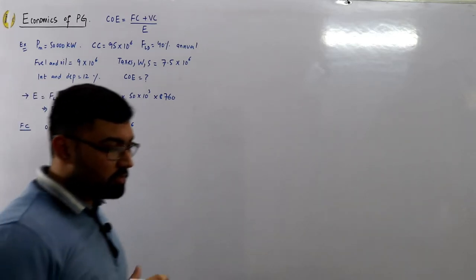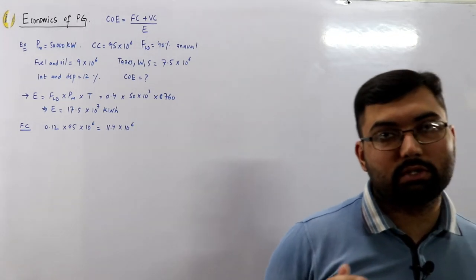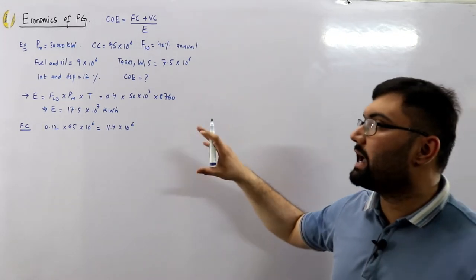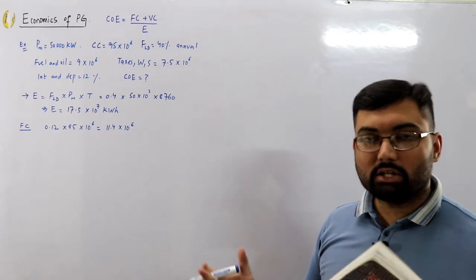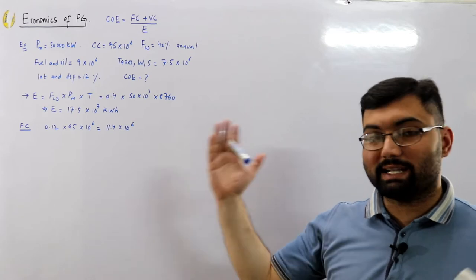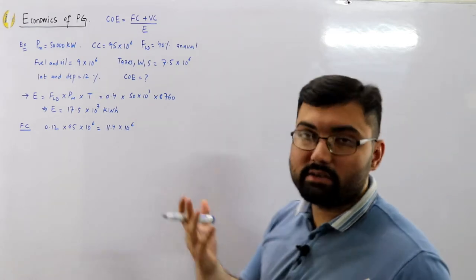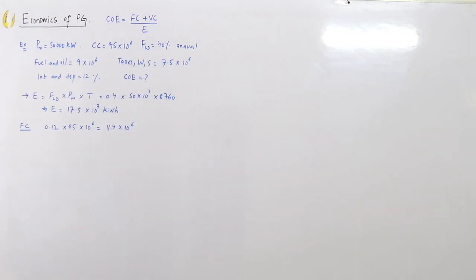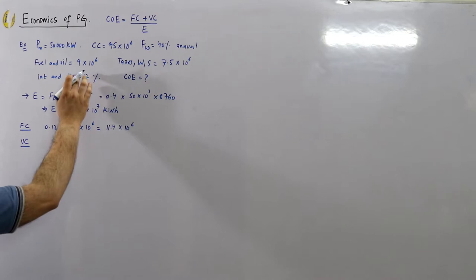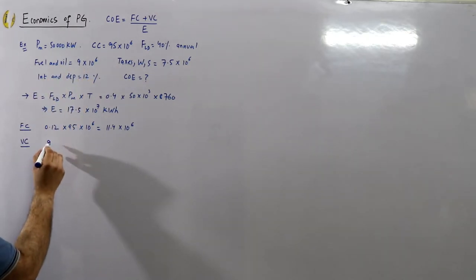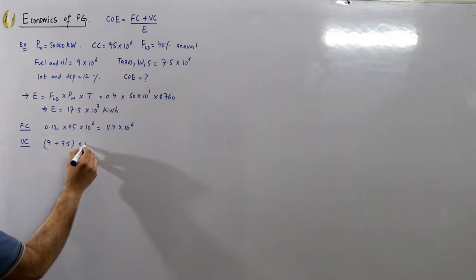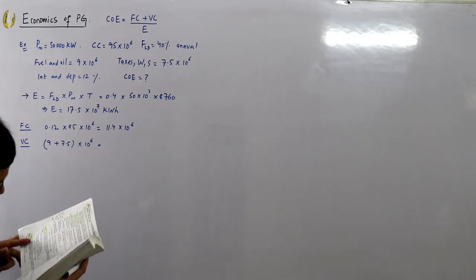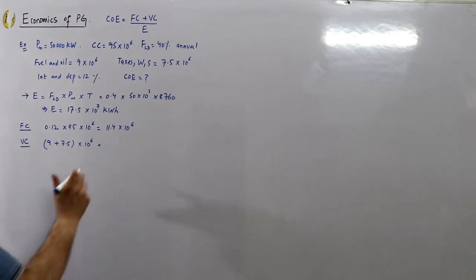You may ask why we don't take the full capital cost. We are dealing with annual calculations, and the capital cost is spread over the entire lifespan of the equipment — 40 to 70 years. The variable or running cost includes fuel (9 million) and taxes, wages and salaries (7.5 million): 9 + 7.5 = 16.5 × 10⁶ rupees.